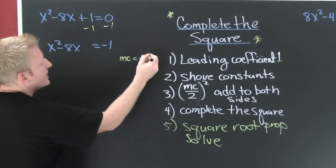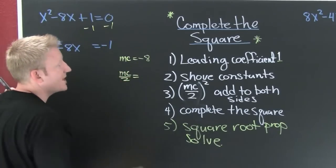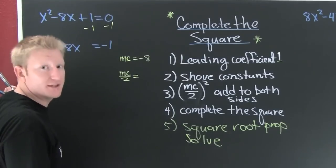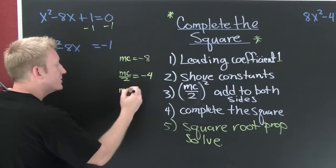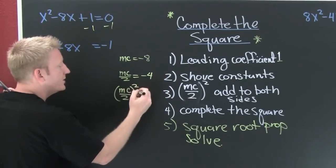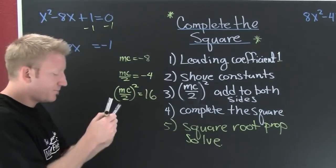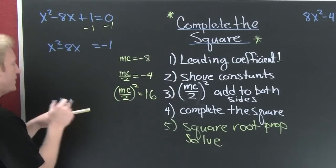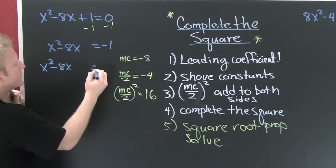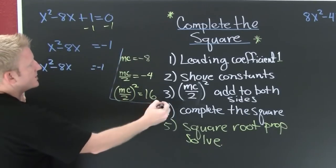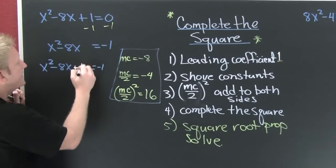My middle coefficient is minus 8. Then you need to find the middle coefficient over 2. What does that mean? Divide by 2. If it's a fraction, double the denominator. Then this is minus 4. Then the middle coefficient over 2 squared. Oh, minus 4 squared? 16. Yes. That's step three. We take half the middle coefficient squared and add it to both sides. And that's where I'm at right here. x squared minus 8x is equal to minus 1. This is all side work. And speaking of side, I take half the middle coefficient squared, and I add that to both sides.